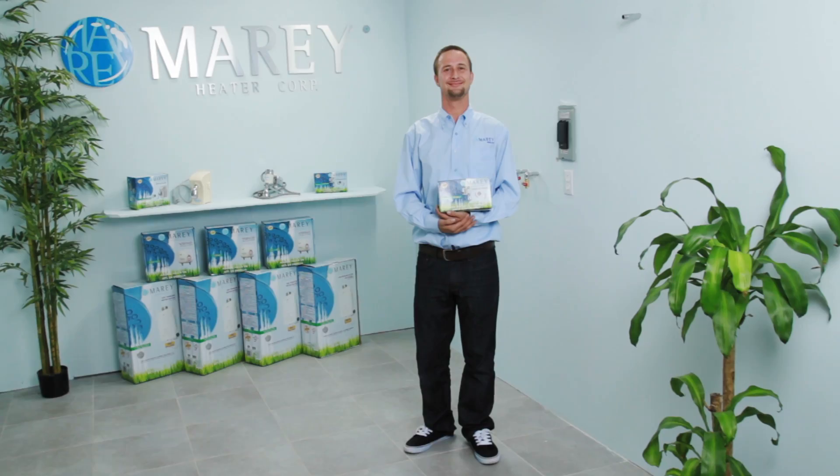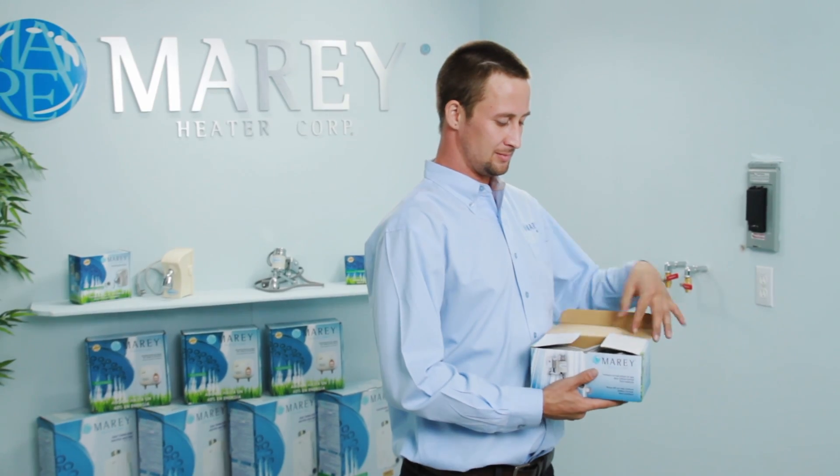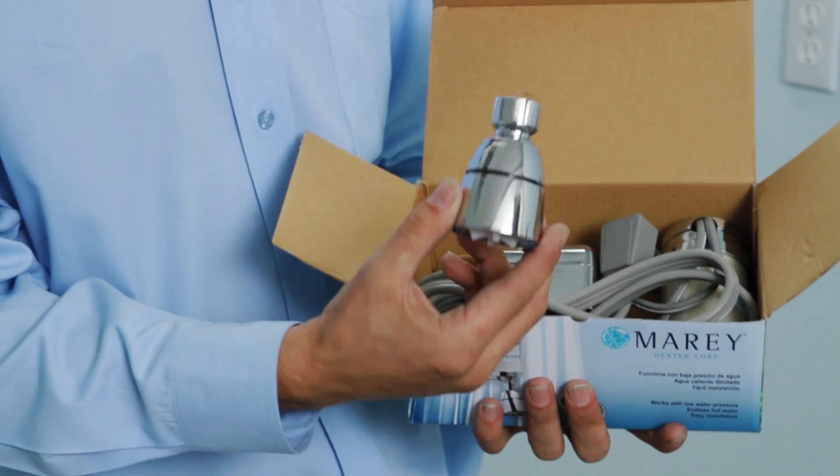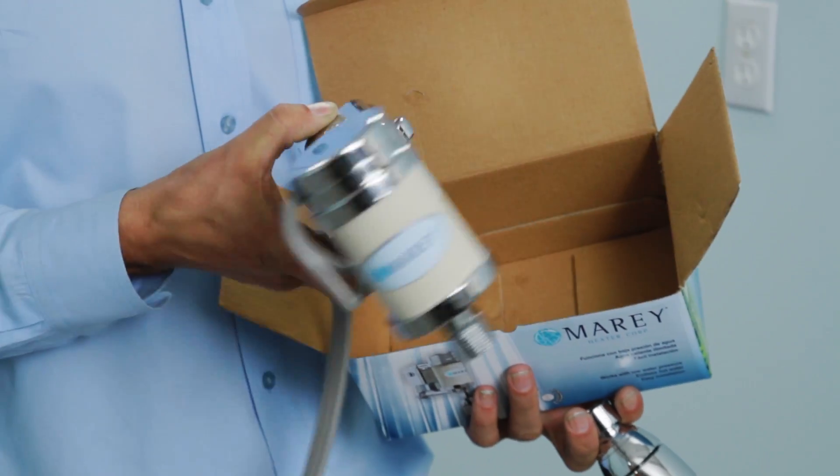The 110 volt version requires a 30 amp dedicated circuit for proper operation. The 220 volt version requires a 15 amp dedicated circuit. The circuit breaker should never be shared with any other electrical devices.